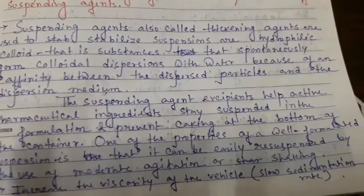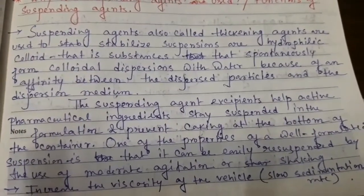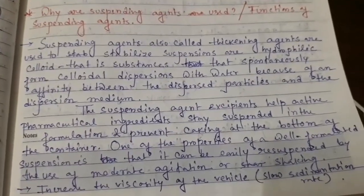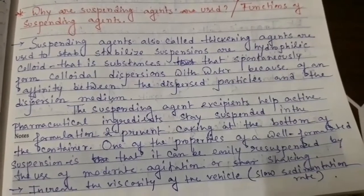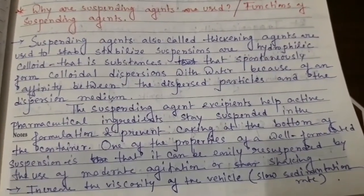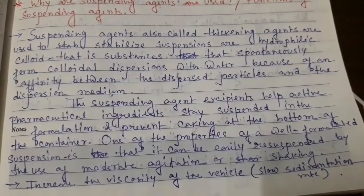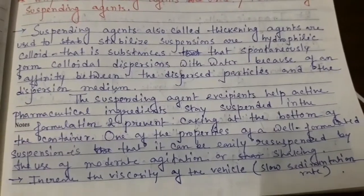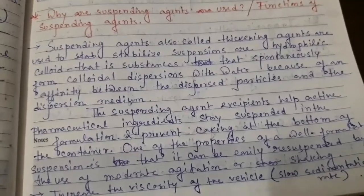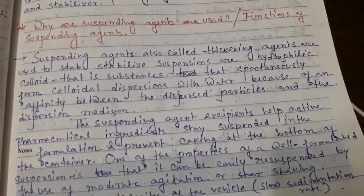The suspending agent excipients help active pharmaceutical ingredients stay suspended in the formulation and prevent caking at the bottom of the container. One of the properties of a well-formulated suspension is that it can be easily resuspended by the use of moderate agitation or shaking, increase the viscosity of the vehicle, and slow the sedimentation rate. So this is the function or uses of the suspending agent in the suspension.